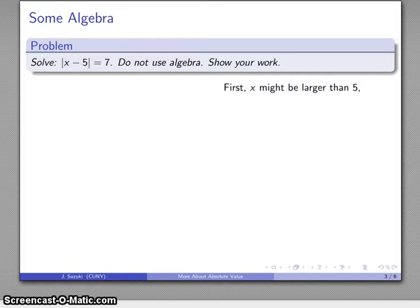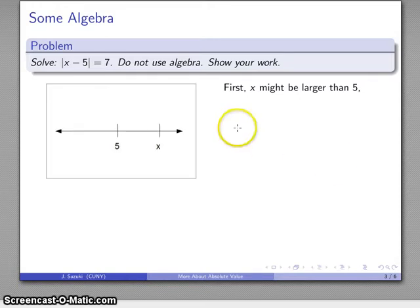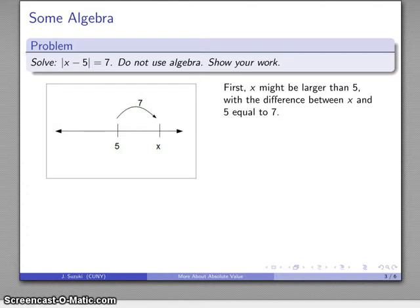Since X is not equal to 5, it might be larger. So here's my number line, here's 5 on the number line, here's X which is larger. And what do I know? Well the difference between X and 5 is 7, which says that the difference between X and 5, this amount here, is going to be 7. So if I take a look at my number line, what that says is that if I start at 5 and take a hop up 7, then I get to X.